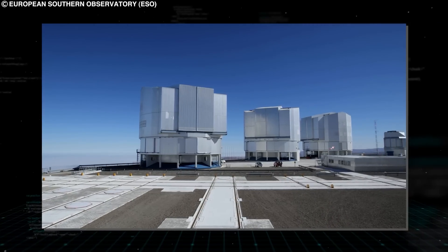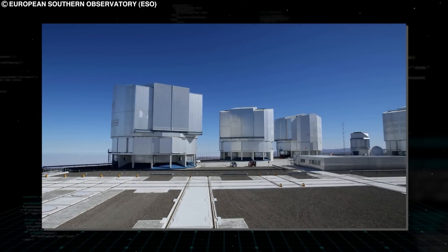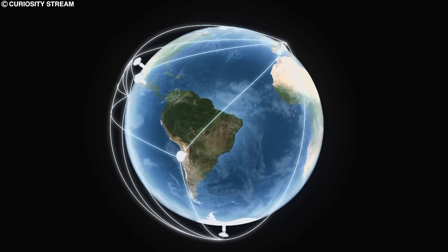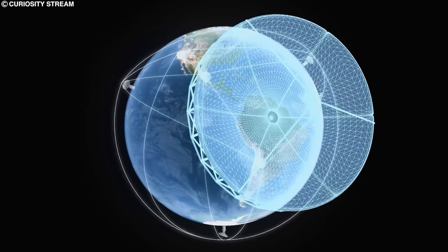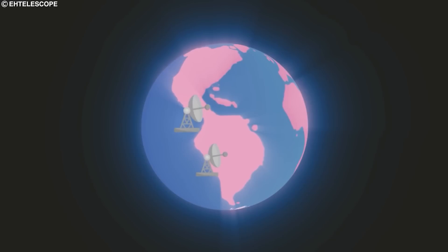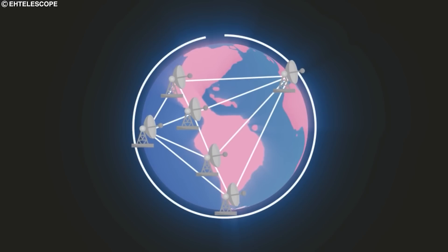The antennas from these observatories all needed to be synchronized down to the nanosecond, such that atomic clocks were placed at each location to kickstart the process at the exact same moment. The antennas and observatories used to capture the image of Sagittarius A had to observe in radio wavelengths for one major reason.